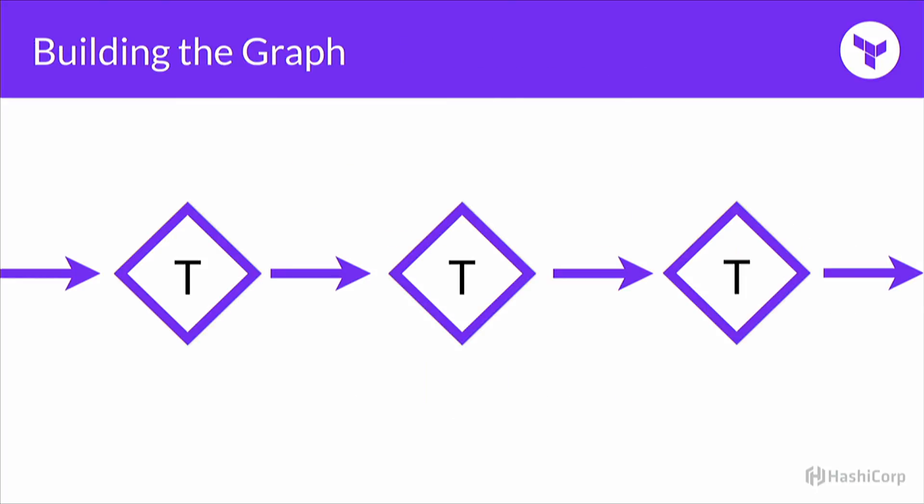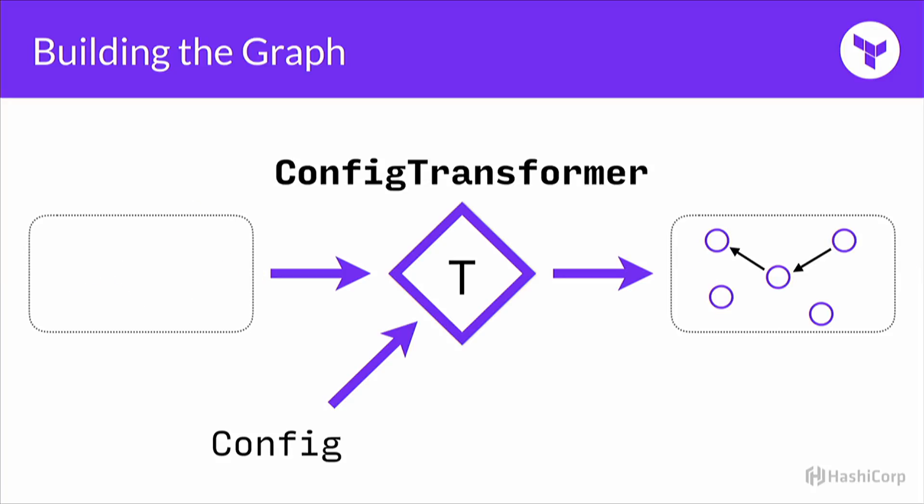The Terraform package reads the config and then makes the graph. How does it make the graph? It does that with a series of graph transforms. If you go down into the Terraform package, you'll find a graph builder object. The graph builder is essentially just a list of graph transforms. The first transform starts with an empty graph — it's called the config transformer, and it's responsible for taking in the config from the user and producing the first step of the graph. It takes everything you've written into your file, all the resources you'd like created, and connects some basic lines.